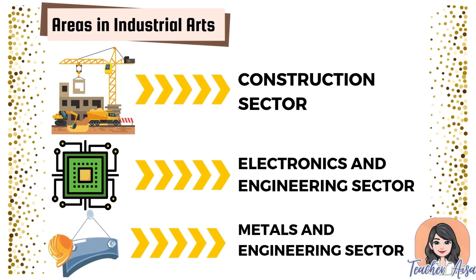Industrial arts exposes students to various technical and trade disciplines. While it does not aim to produce tradespeople directly, it familiarizes students with multiple industries requiring both mental and manual skills. Key areas include: construction sector, electrical installation and maintenance, electric power distribution, line construction, transmission line installation, electronics and engineering sector, electronic products assembly and servicing, mechatronics servicing, heating ventilation air conditioning and refrigeration, and the metals and engineering sector including automotive and land transportation.